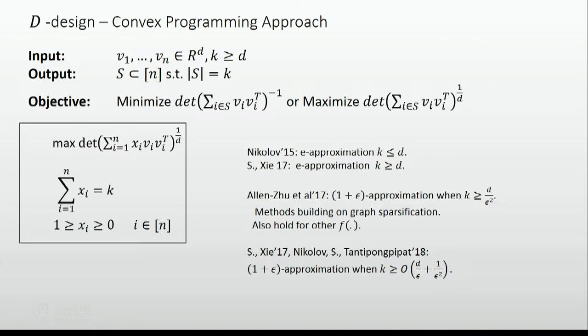Regarding hardness: when K is at most D, the problem is APX-hard. You cannot get a 1+epsilon approximation for arbitrarily small epsilon — there's a constant threshold below which you can't do better. But the exact constant is not known to be e, and we don't think e is the right answer either.